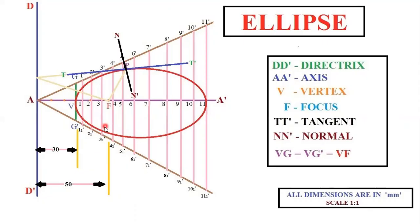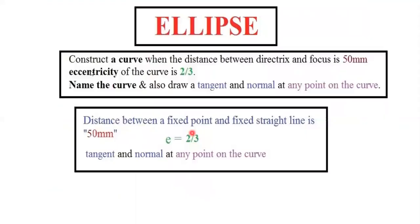When you complete your diagram you will get a shape called an oval shape. The problem: construct a curve with a distance between directrix and focus of 50 mm, eccentricity of the curve is 2/3. The directrix is a fixed line, focus is a fixed point. Name the curve and draw the tangent and normal at any point on the curve. The fixed point is the focus, the fixed line is the directrix, distance between them is 50 mm, and eccentricity ratio is 2/3.